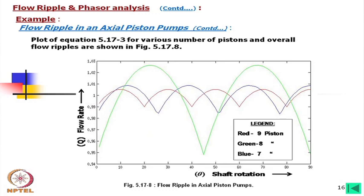The blue curve shows 7-piston flow fluctuation, plotted using the derived formula. For 9 pistons the ripple is further reduced, while for 8 pistons it increases. The y-axis represents displaced volume in cubic meters or cubic inches depending on scale, and can also be presented in dimensionless form.